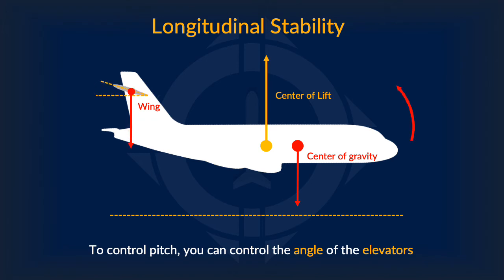By decreasing the angle of attack further, you can cause the force acting downwards to increase in magnitude, causing the airplane to pitch upwards. While increasing the angle of attack causes the slightly nose-heavy characteristics of an airplane to cause it to nosedive.